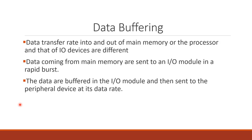The data is sent to the IO module, and that is why we call this writing. The memory data goes to the output device through input/output. The IO module uses a buffer, and they will manage the data transfer rate difference between the fast memory and the slow input/output device.